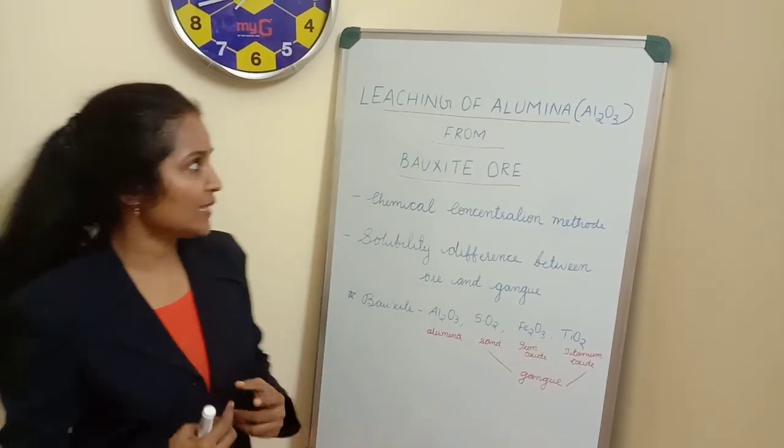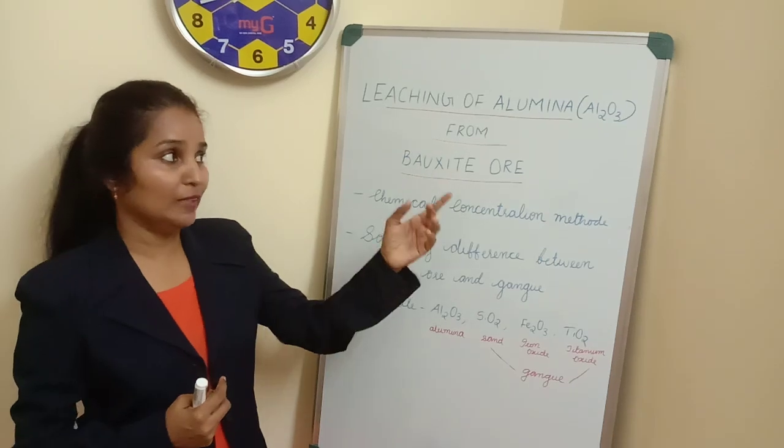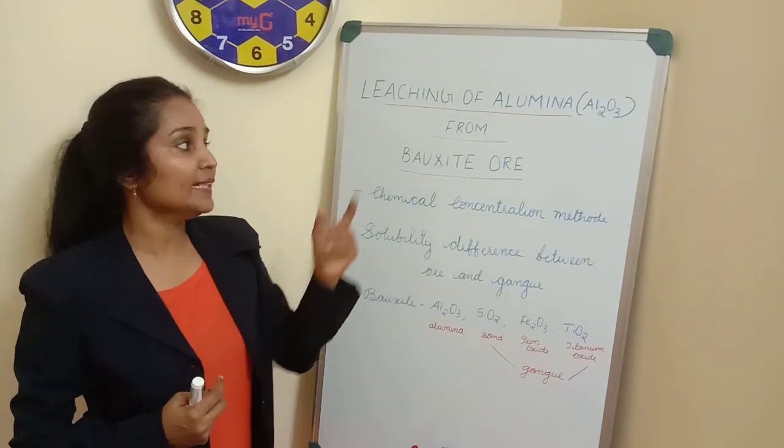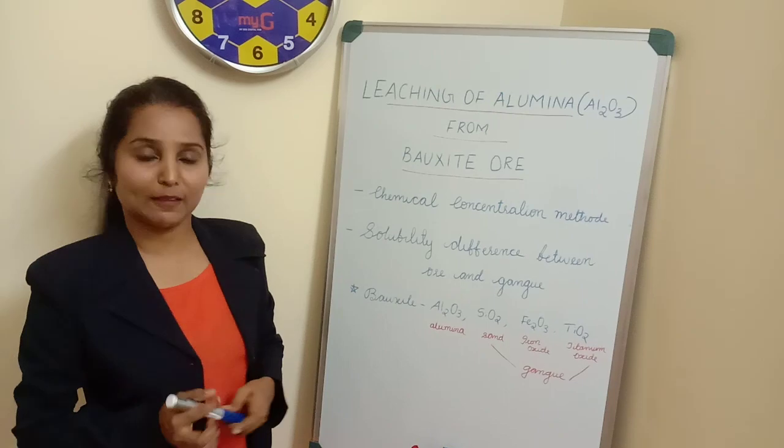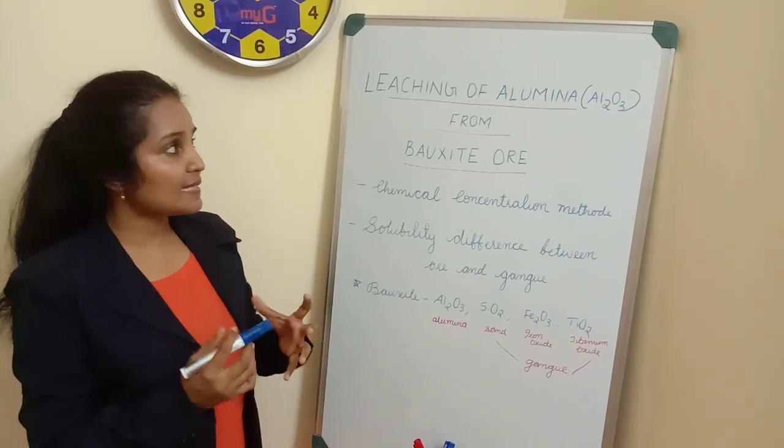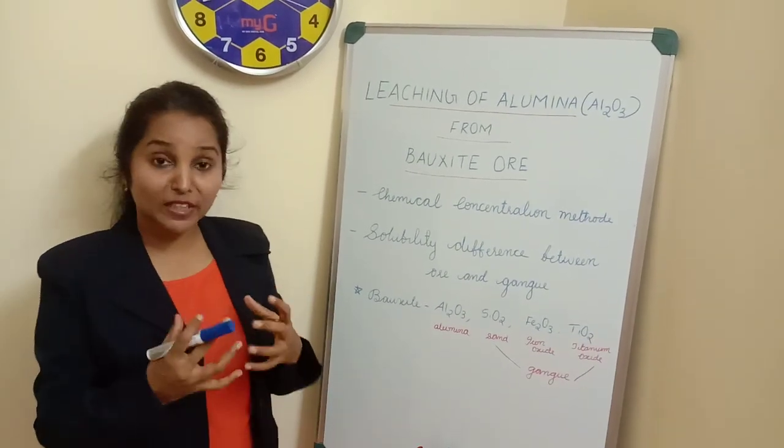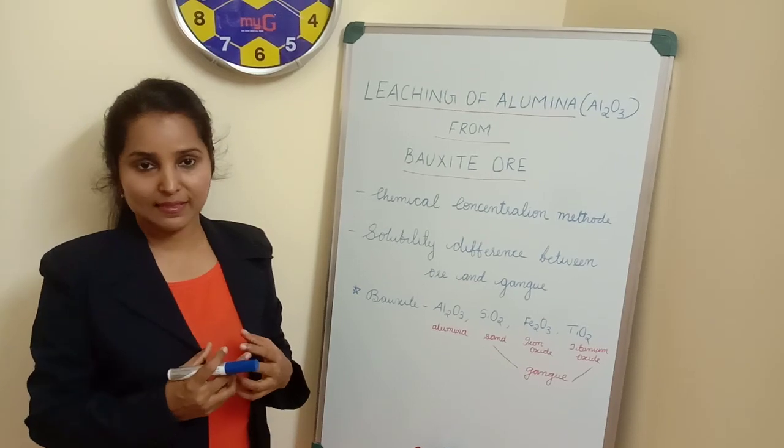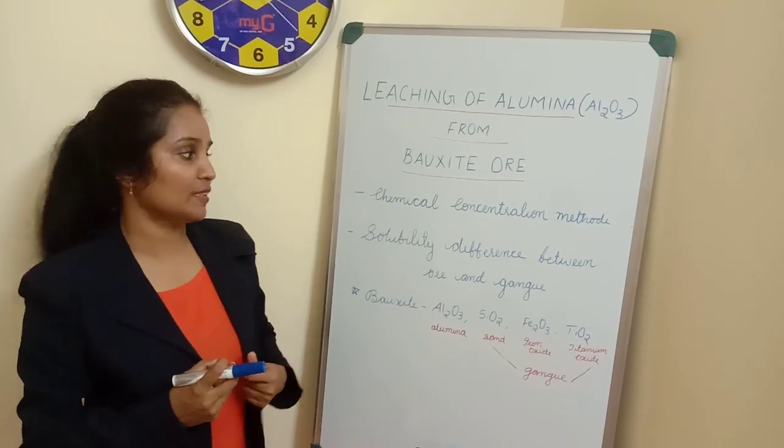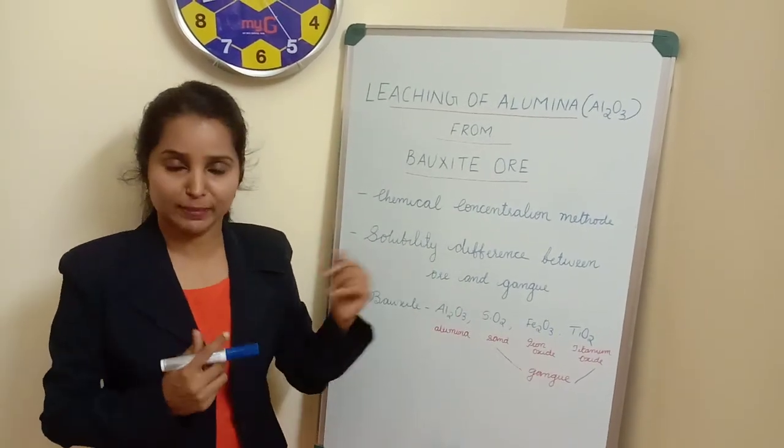Coming to the topic, leaching of alumina, that is Al2O3 from bauxite ore. This leaching process is one of the concentration methods, and this concentration method is known as chemical concentration method.